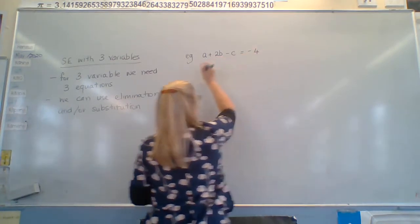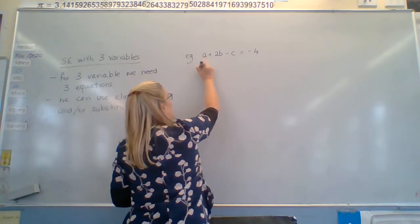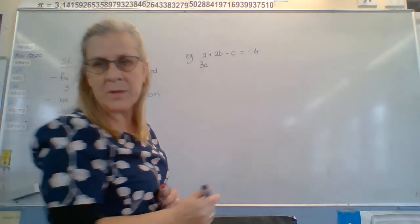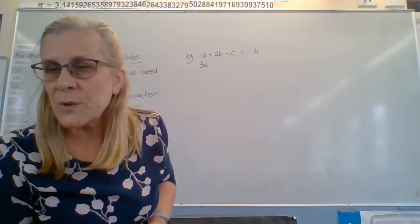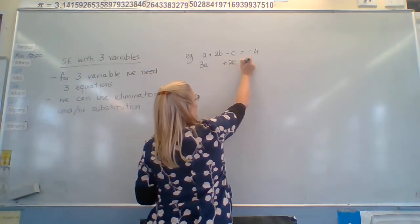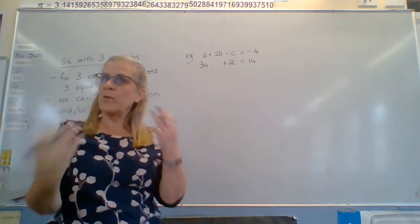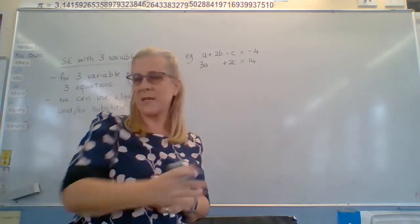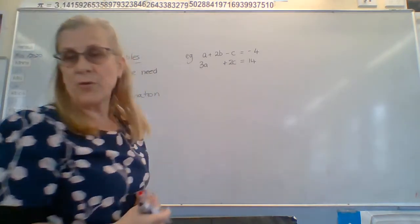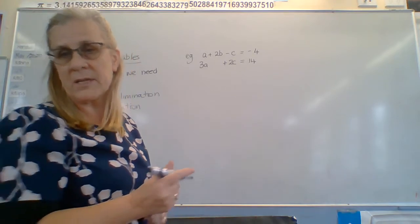Negative four. I'm going to write this funny, but that's just because I'm saving time. 3a plus 2c equals 14. So normally this would be over here, but when we write it down, we want to line them up so we can actually see what are the a's, what are the b's. And we need to rewrite it if they aren't all in the same order. 4a minus 4b minus 3c.